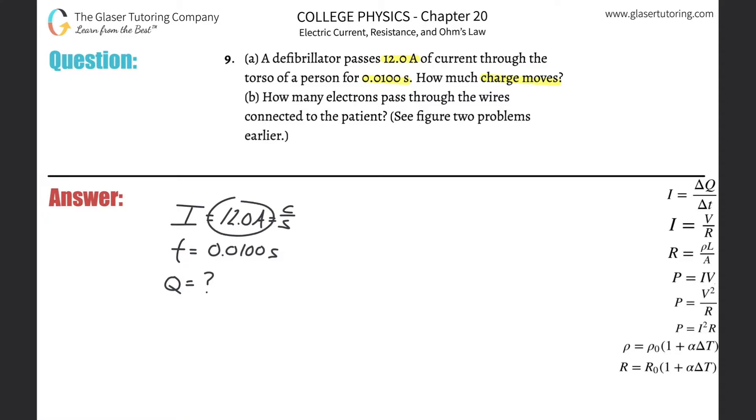So if you know that 12 amps, in other words 12 coulombs per second, are flowing through a particular point, and you know the time that charge is flowing through that particular point, then I think you might be able to figure out how to calculate the charge. In case that doesn't make sense, you can always memorize the formula.